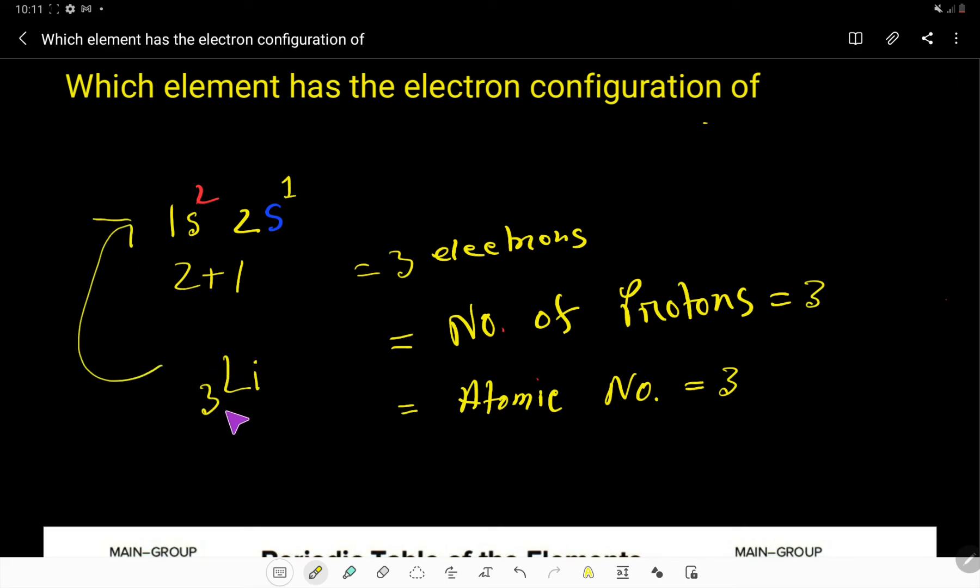Its atomic number three means it has three protons and three electrons since this is a neutral atom. Thank you for viewing this video, be well.